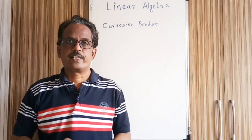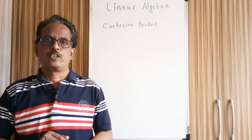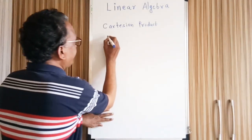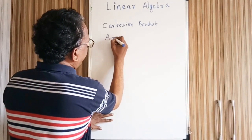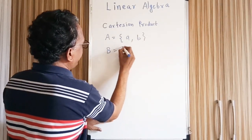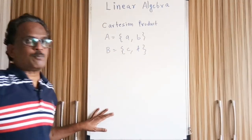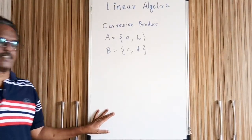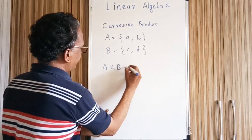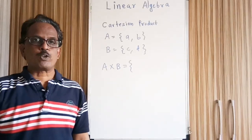So let us see the first terminology: Cartesian product. To define Cartesian product we require sets. Let us consider that we are having two sets: Set A having elements A, B and Set B having elements C, D. Then the Cartesian product of these two sets is written as A cross B, and every element of A cross B will be a pair.